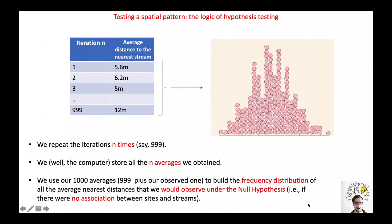We repeat the procedure many times — for instance, 999 times — eventually getting 999 averages of randomized minimum distances. The distribution of our 1,000 averages represents the null hypothesis: those are the average minimum distances that we would observe under the null hypothesis of no association between sites and water streams.